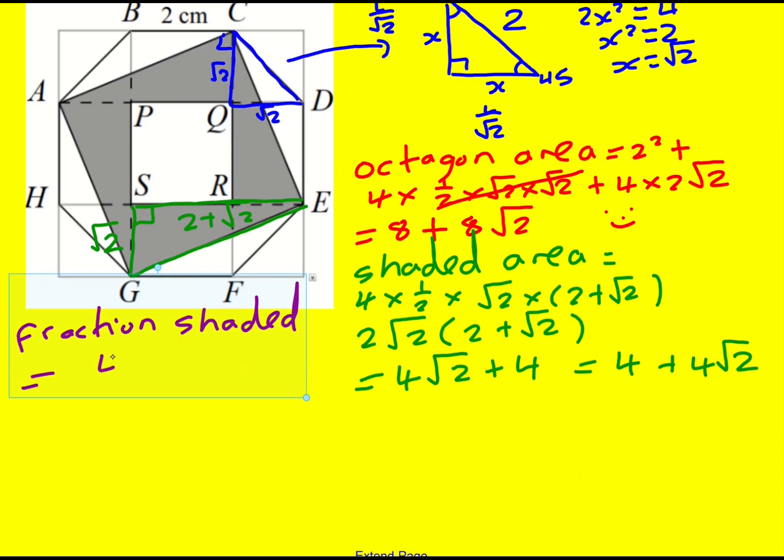Well, it's going to be our 4 plus 4 root 2, the area that's shaded, divided by 8 plus 8 root 2. But notice, I can factorize a 2 out of that, which means this just cancels. And we're left with a final answer of a half. Brilliant.